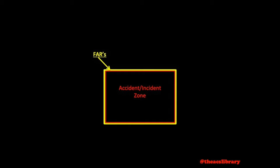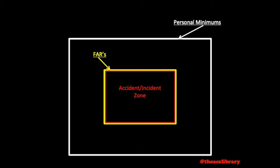Imagine a zone where accidents and incidents occur. The Federal Aviation Regulations serve as a barrier to keep us from entering the accident-incident zone. Personal minimums serve the purpose of creating an additional buffer between us and the accident-incident zone, as well as keeping us from coming close to breaking any regulations.